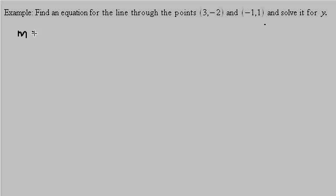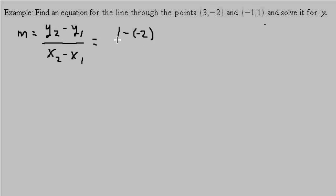So the slope, which is y2 minus y1 over x2 minus x1, equals y2 minus y1, which is 1 minus negative 2, over x2 minus x1, which is negative 1 minus 3. So this gives us 3 over negative 4, so our slope is negative 3 fourths.